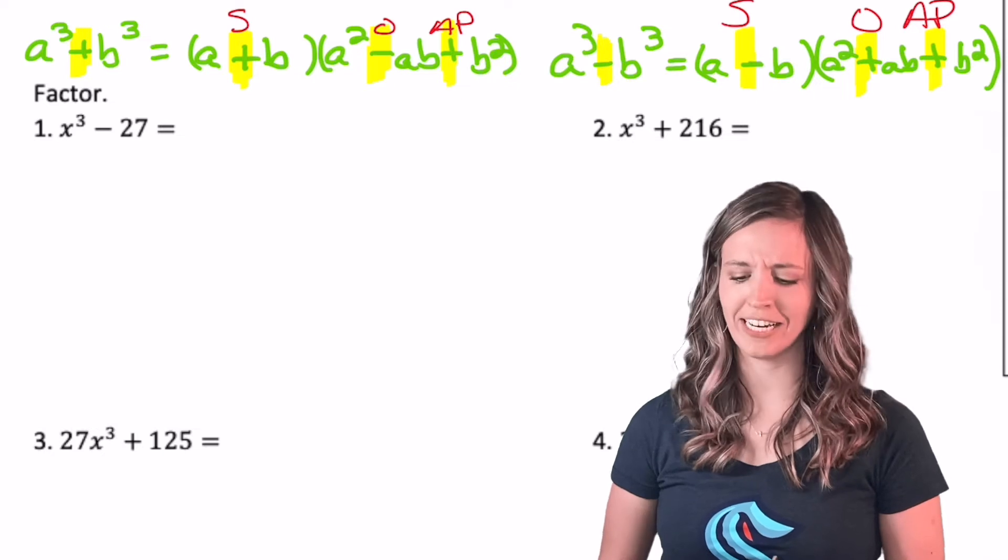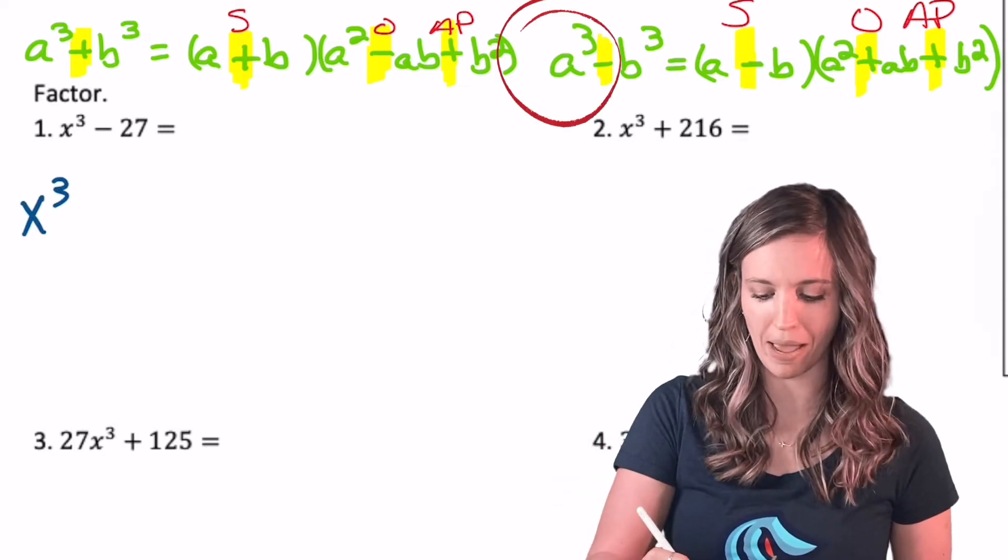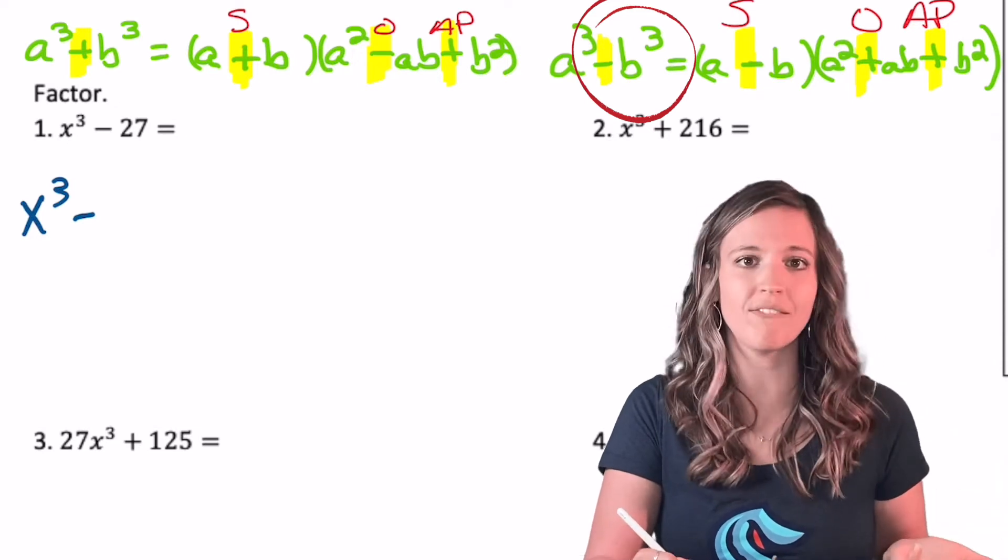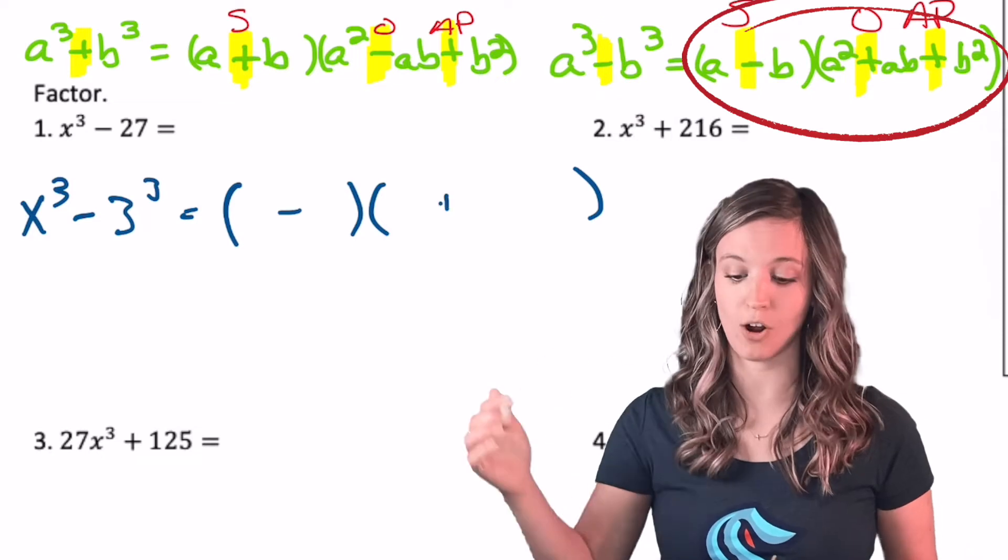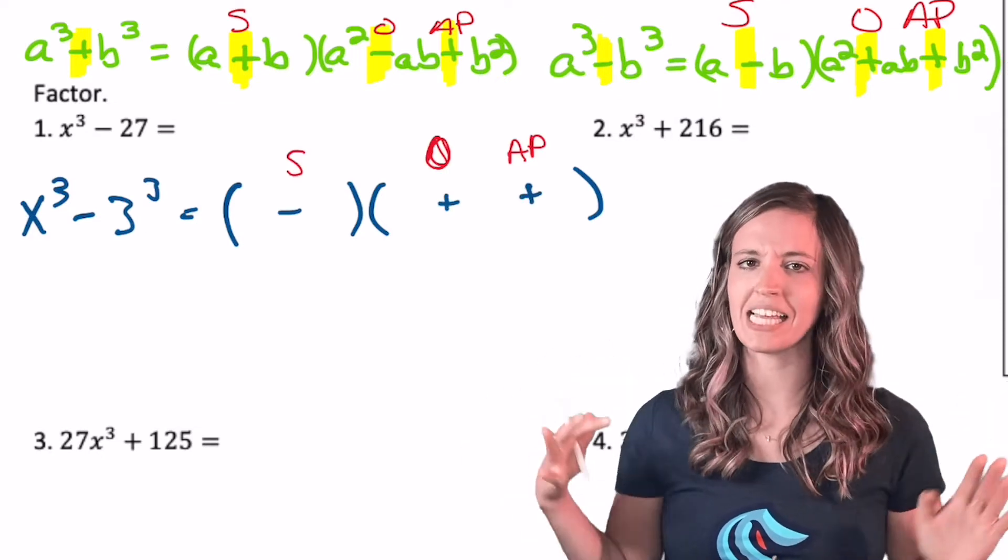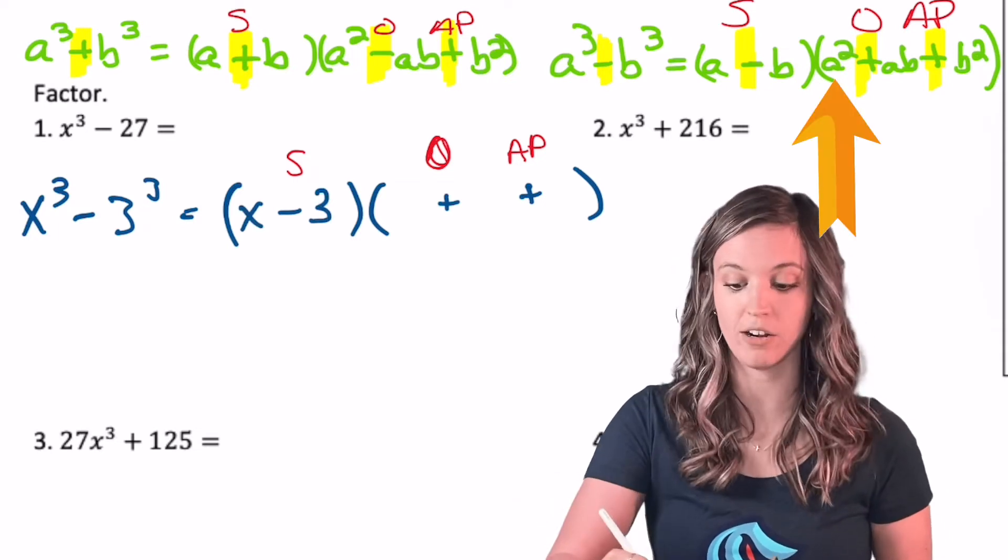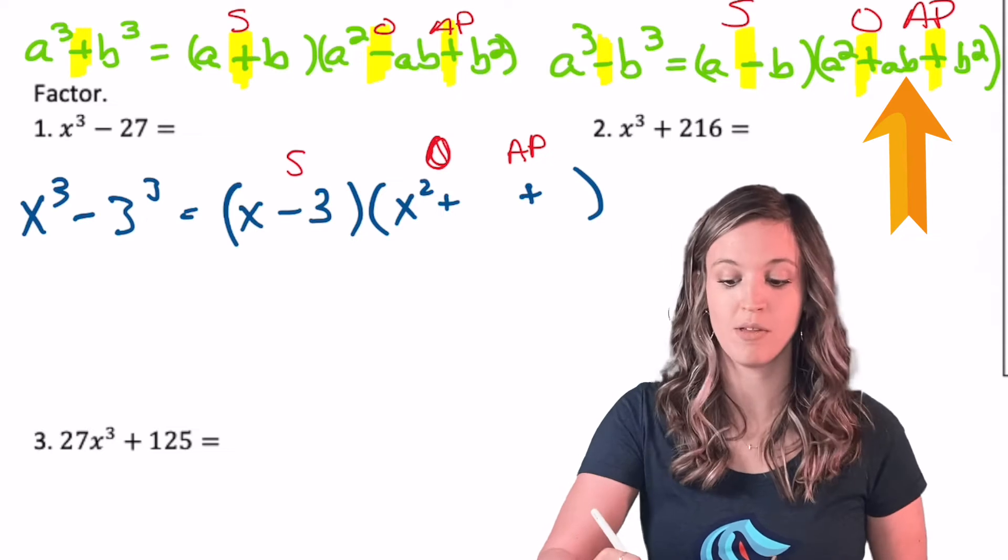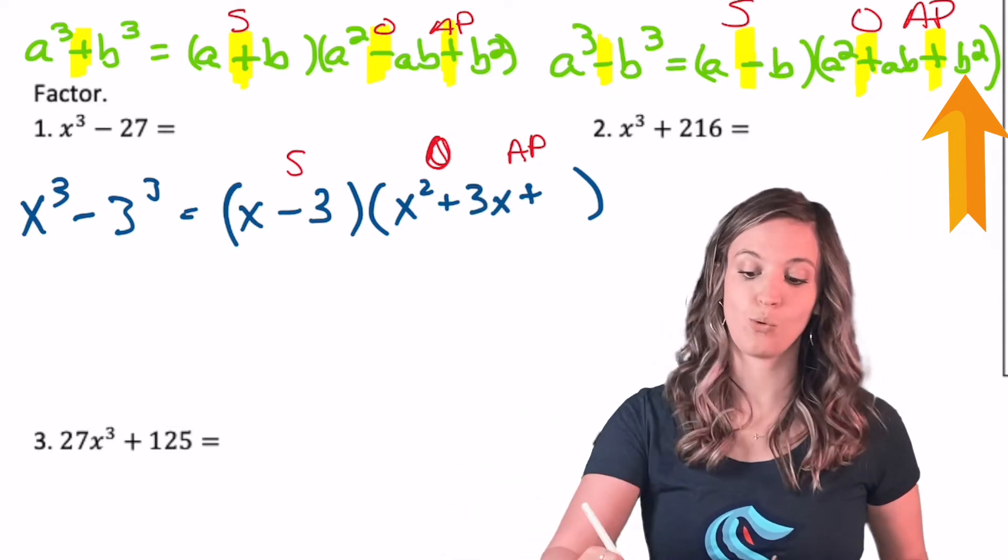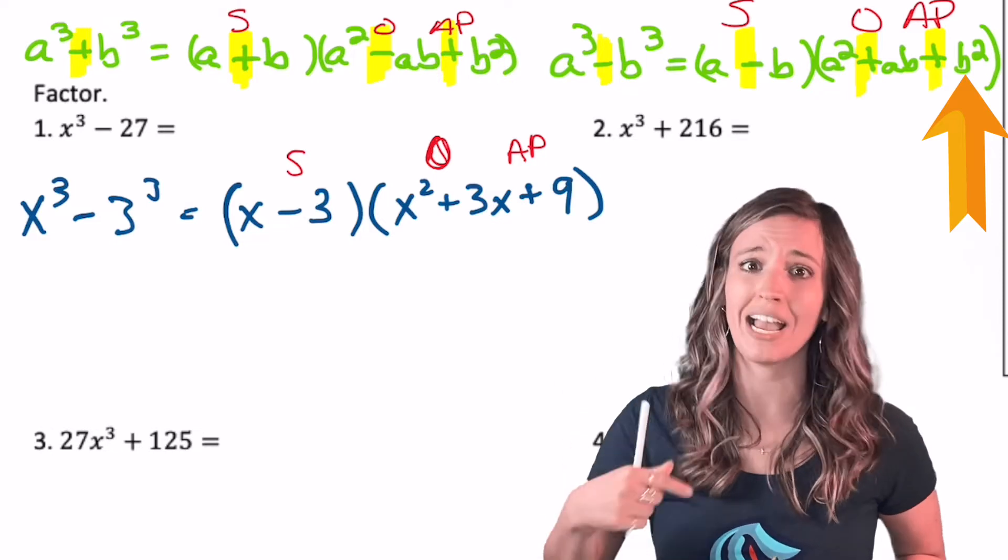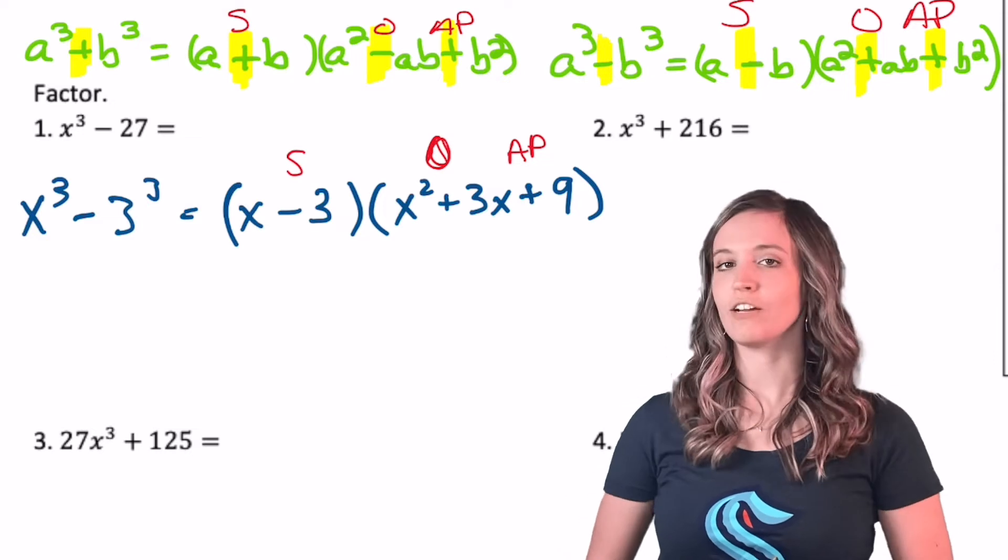All right, so let's try this with x cubed minus 27. Well, my a term would just be x cubed, and my b term would be, what cubed is 27? Three cubed. Binomial, trinomial, as I start to factor: same, opposite, always positive. Now that I have my setup, first term, last term. So x minus three, first term squared, x squared. First term times last term, three x, x times three. And then last term squared, so three squared is nine. I'm gonna make sure I write it as nine, not three squared. There we go, we have a nice factored difference of cubes.